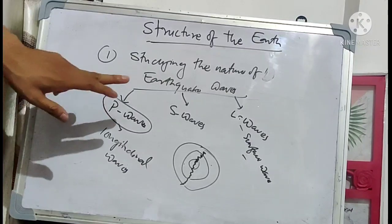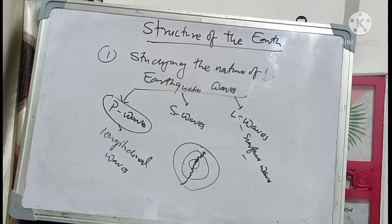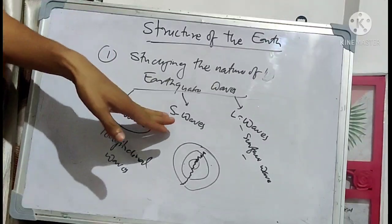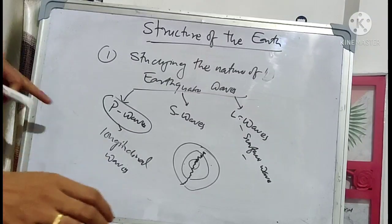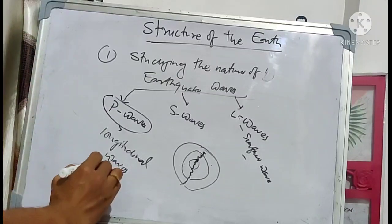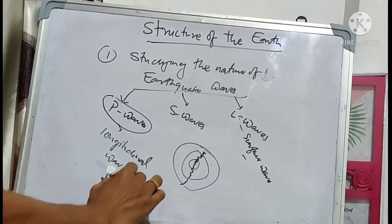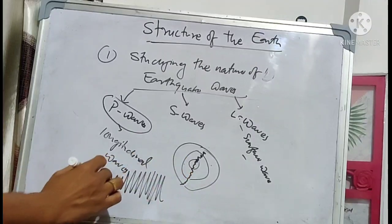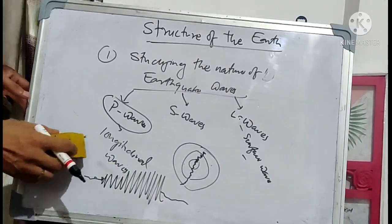P waves can travel through all media — solid as well as liquid. Some waves do not penetrate the liquid medium and change direction; such waves are S waves and L waves. In a seismograph, longitudinal waves appear as a straight-line pattern. This is how P wave movement is recorded.